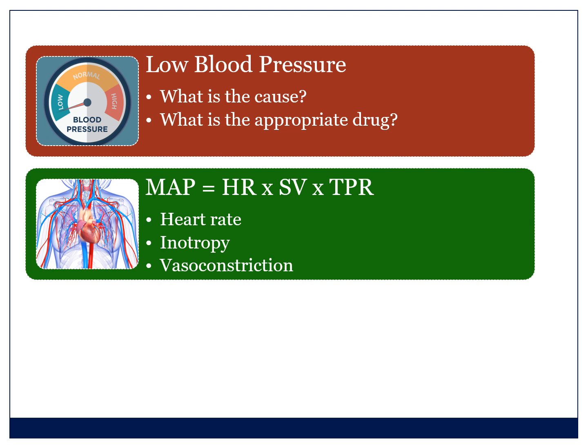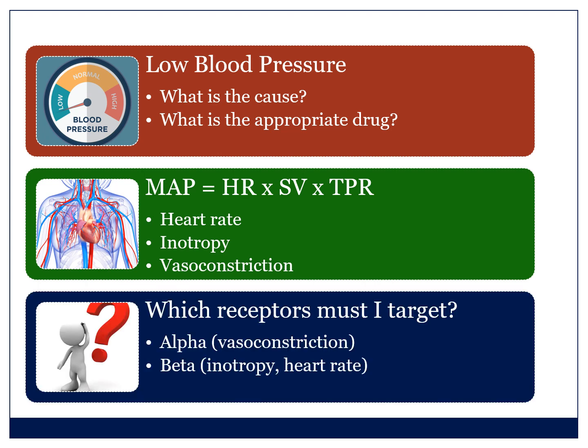Remember that blood pressure or mean arterial pressure is a product of heart rate times stroke volume times total peripheral resistance. When we aim to treat hypotension, we will treat either the heart rate, the inotropy which affects stroke volume, or the degree of vasodilation or vasoconstriction which relates to total peripheral resistance. Stroke volume has many contributing factors — preload would affect stroke volume and would obviously be affected by fluid status. We will treat the blood pressure based on the receptors we need to target.